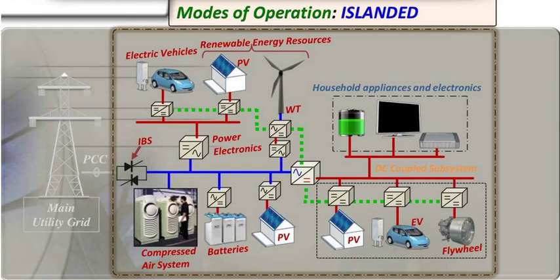Key Characteristics of Grid Connected Operations: Bidirectional Power Flow — power can flow in both directions, from the generation sources to the consumers and vice versa. Power plants supply electricity to the grid, and consumers draw electricity from the grid as per the demand. Stable Frequency and Voltage — in a well-maintained grid, the frequency and voltage levels are regulated within specific tolerances to ensure reliable and efficient operation of electrical devices. Centralized Control — grid connected power systems are centrally controlled and managed by grid operators who monitor and balance electricity generation and demand to maintain grid stability.